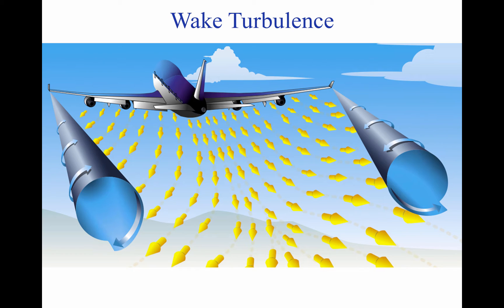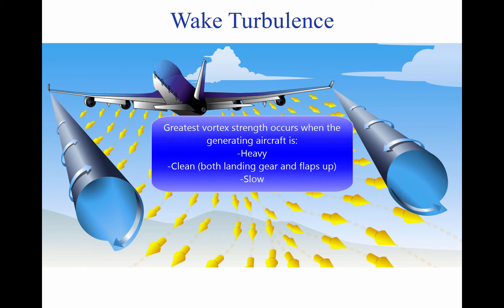Vortex strength. The strength of the vortex is governed by the weight, speed, and shape of the wing of the generating aircraft. The vortex characteristics of any given aircraft can also be changed by the extension of flaps or other wing configuration devices, as well as by a change in speed. The greatest vortex strength occurs when the generating aircraft is heavy, clean, and slow.